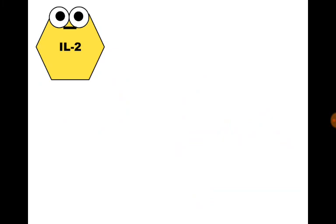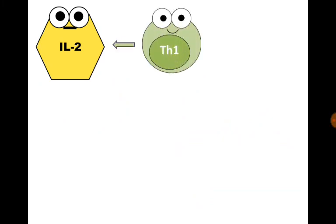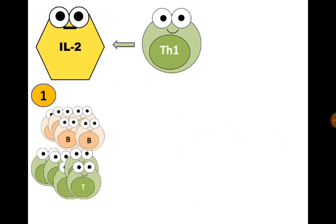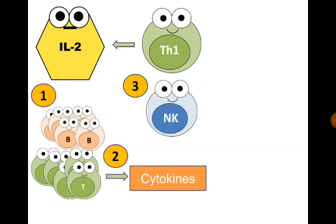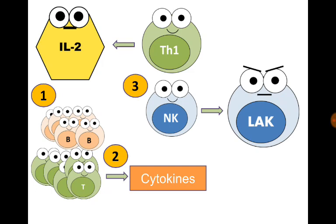Interleukin-2 is produced by T helper 1 cells. It helps B cell and T cell proliferation, stimulates T cells to produce cytokines, and importantly activates natural killer cells to become lymphokine-activated killer cells, which kill abnormal cells effectively.